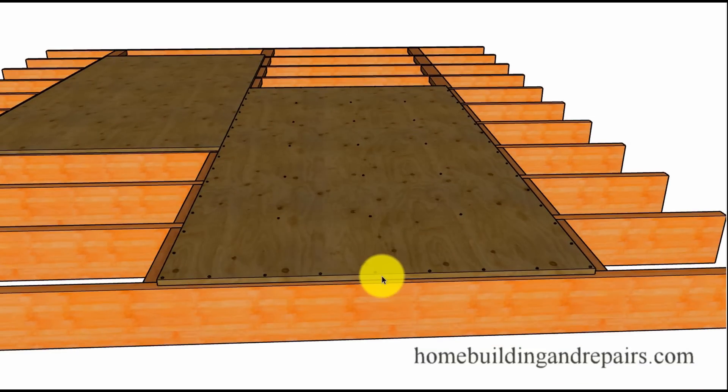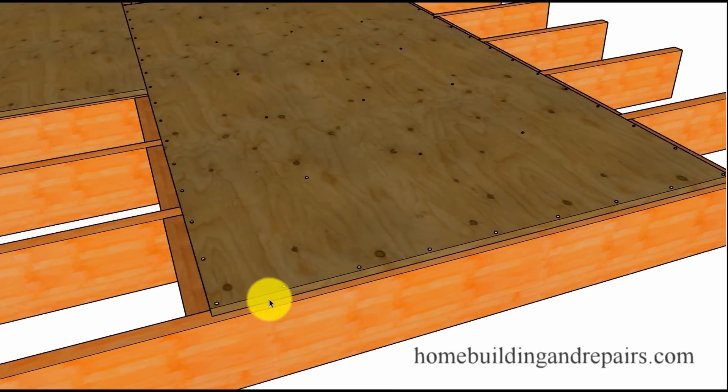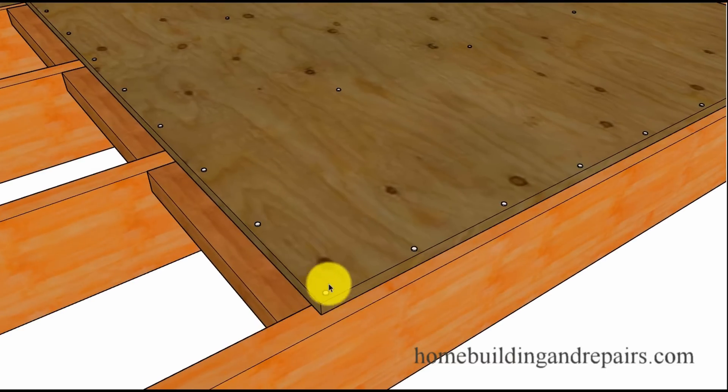The nails around the perimeter are going to be six inches on center spacing. I've never heard anybody say exactly how far away the nail should be from the edge of the plywood. I'm guessing you would keep this nail about three-eighths to a half inch away from each side.